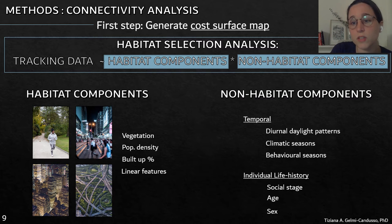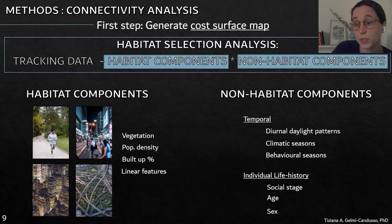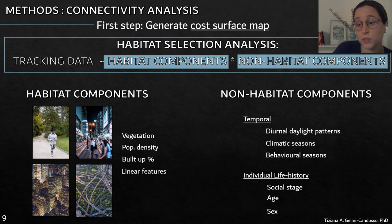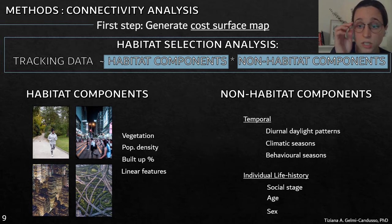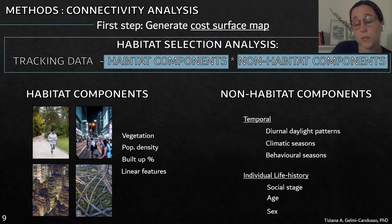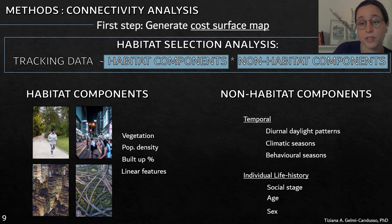In terms of non-habitat components, temporally we used day versus night and climatic seasons. We were concerned whether the different shelter that vegetation provides throughout the year would create a difference in landscape connectivity, and that's why we used winter versus summer as six-month seasons, where we had bare vegetation versus dense vegetation. We also used behavioral seasons: dispersal, pup rearing, and breeding for coyotes.